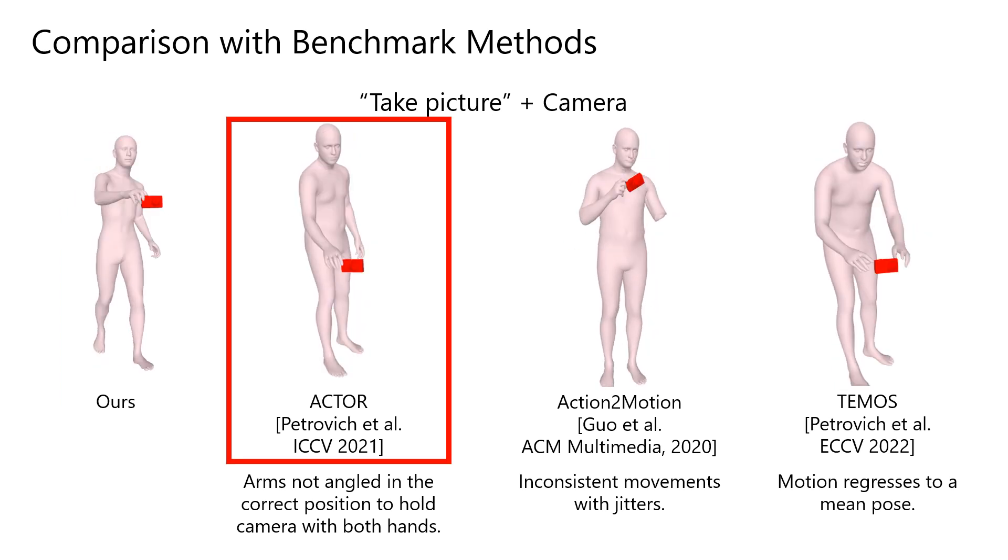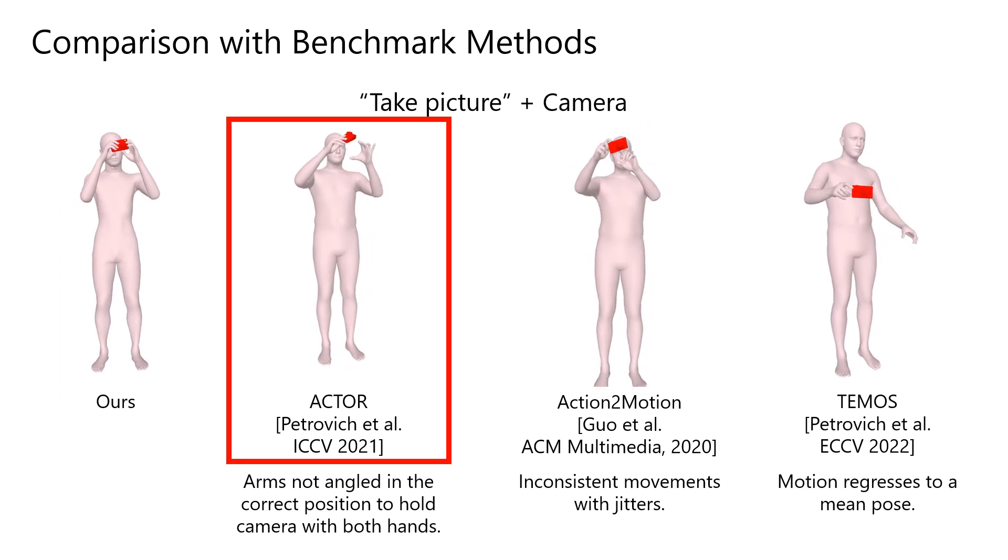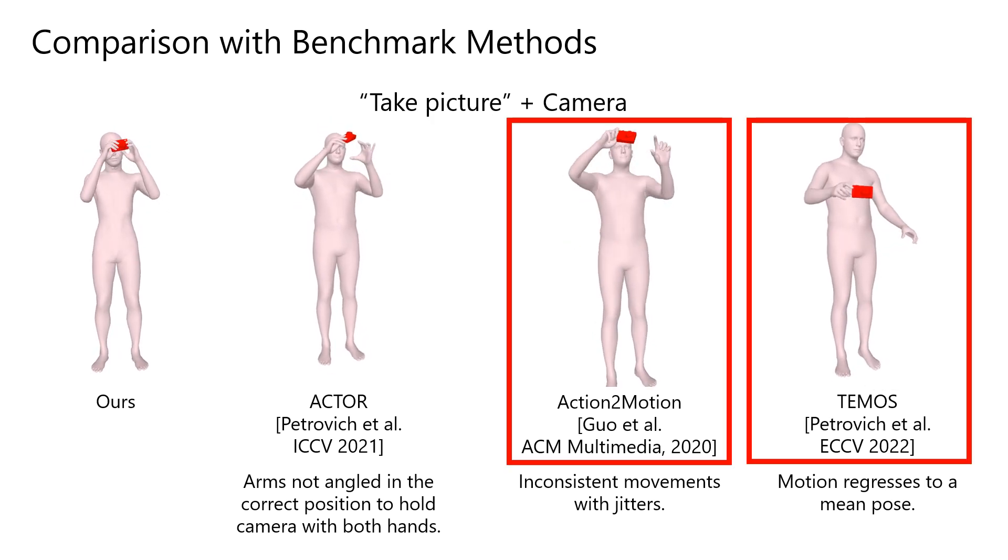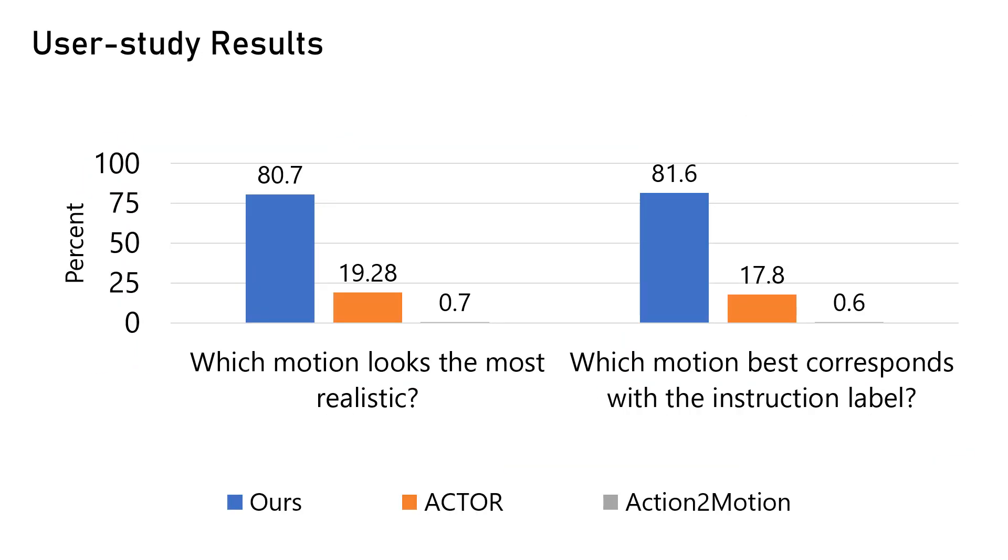For Actor, the arms are angled incorrectly. And for action-to-motion and TEMOS, we see incorrect poses. We also conducted a user study to evaluate our results against the two state-of-the-art methods. Out of 30 randomly selected samples, the users chose our method in more than 80% of the cases.